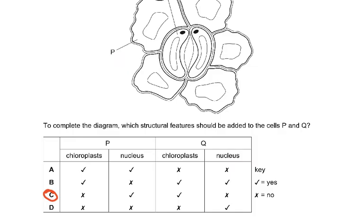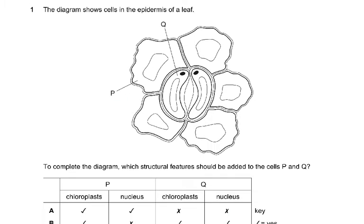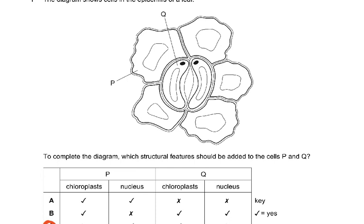Starting with question number 1, we can see the diagram shows cells in the epidermis of a leaf. Q is the guard cell and P are the cells of the epidermis. They've taken a layer off from the bottom of the leaf. To complete the diagram, which structures would be added to P and Q? Now, P is the epidermis, so it does not have any chloroplasts in it.